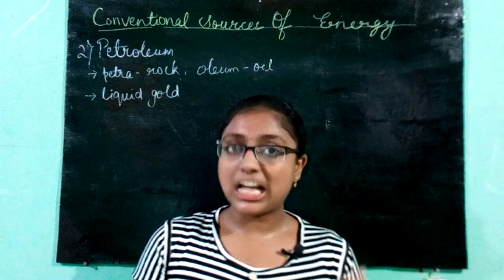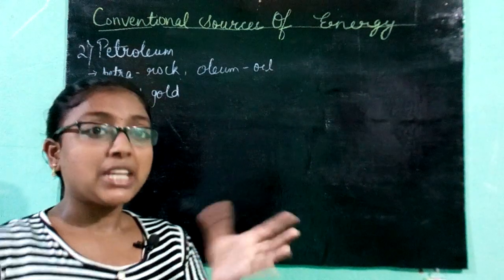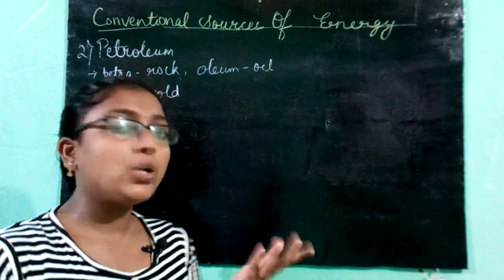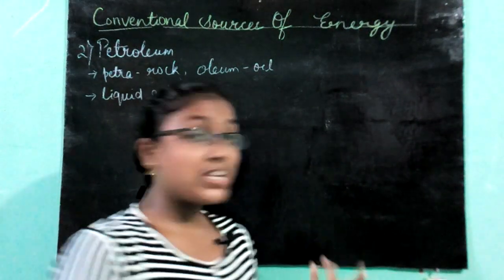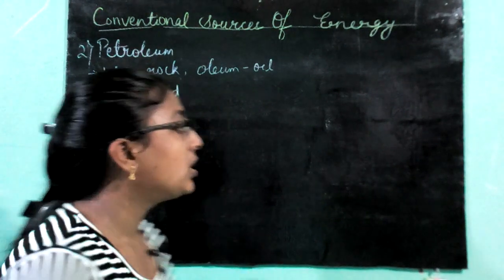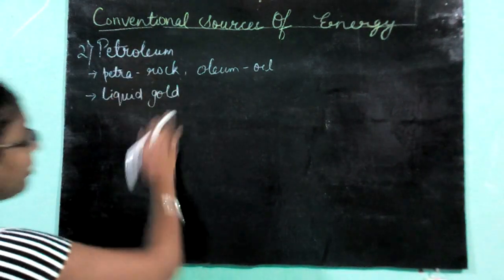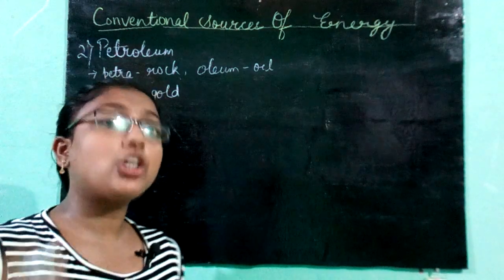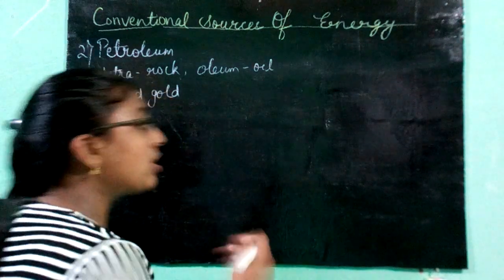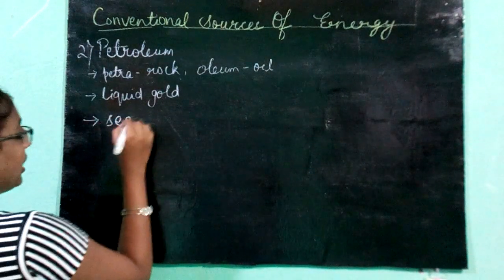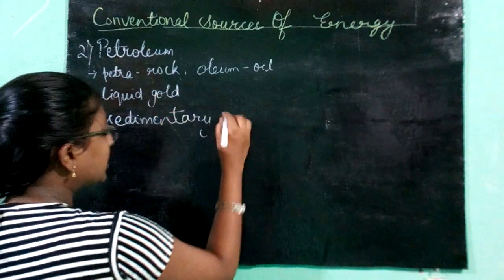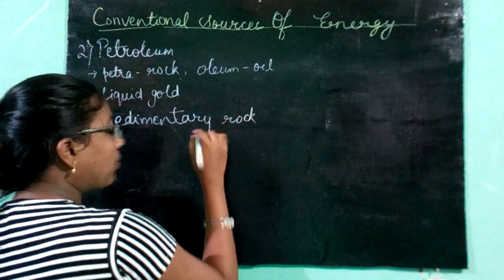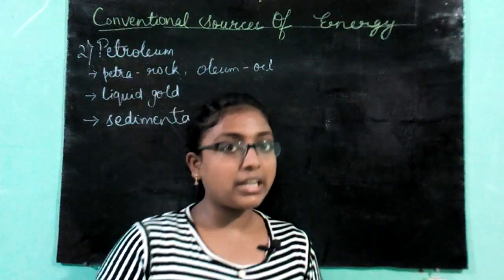Petroleum in the liquid state is used as petrol, diesel, and kerosene. Petroleum in the gaseous state is used as natural gas. Petroleum in the semi-solid to solid state is known as asphalt, tar, pitch, etc. Petroleum is found in sedimentary rocks — just as coal is also found in sedimentary rocks.